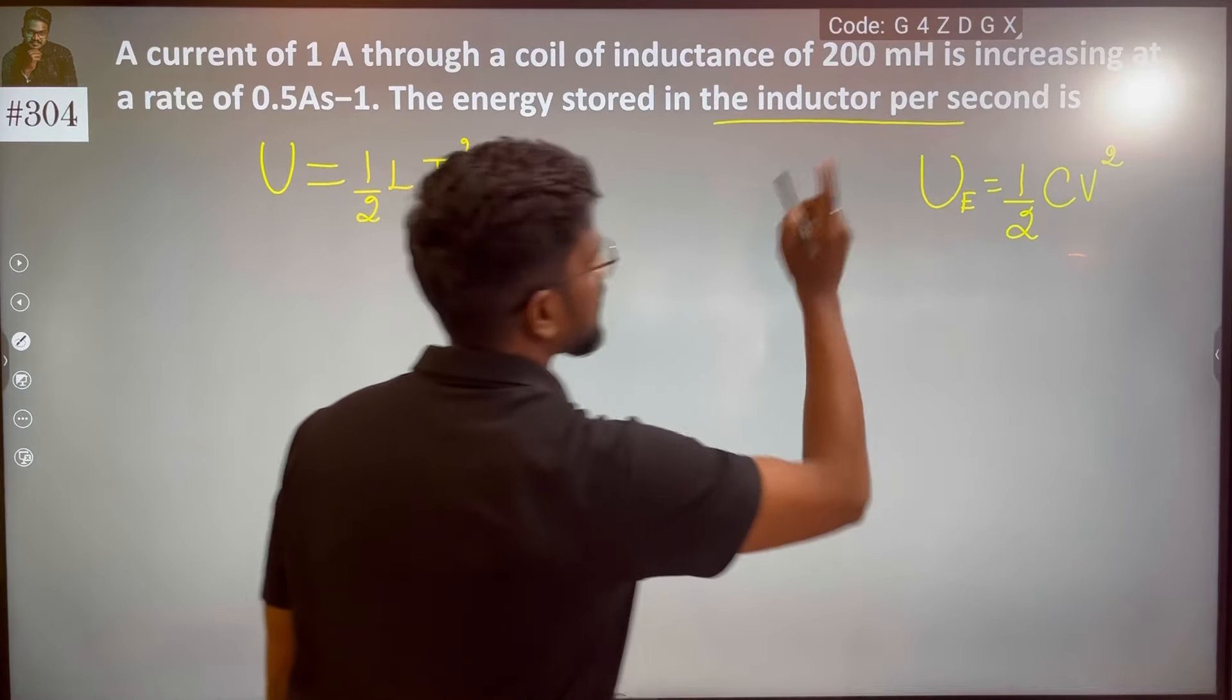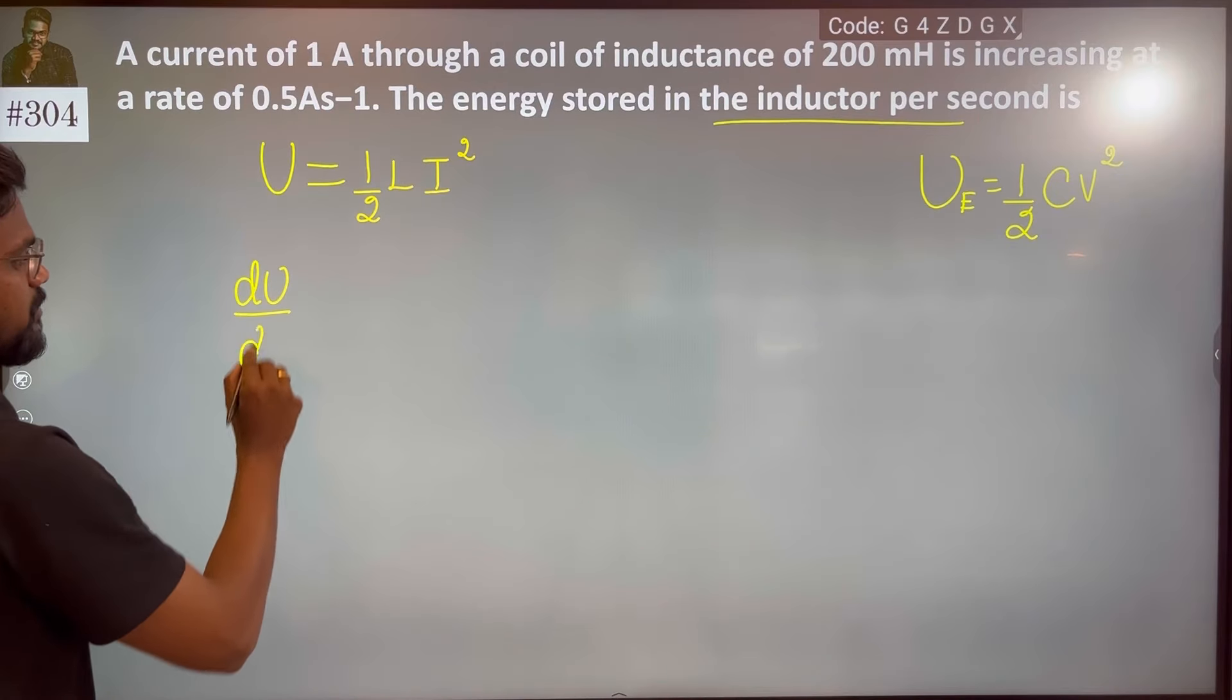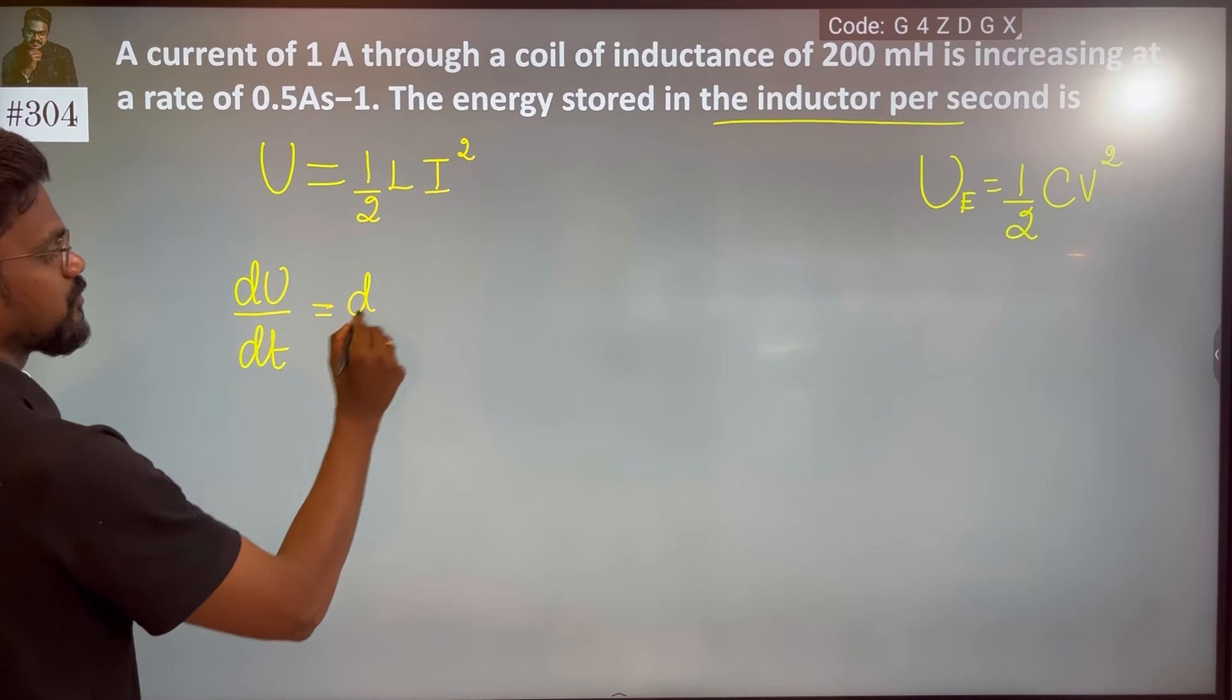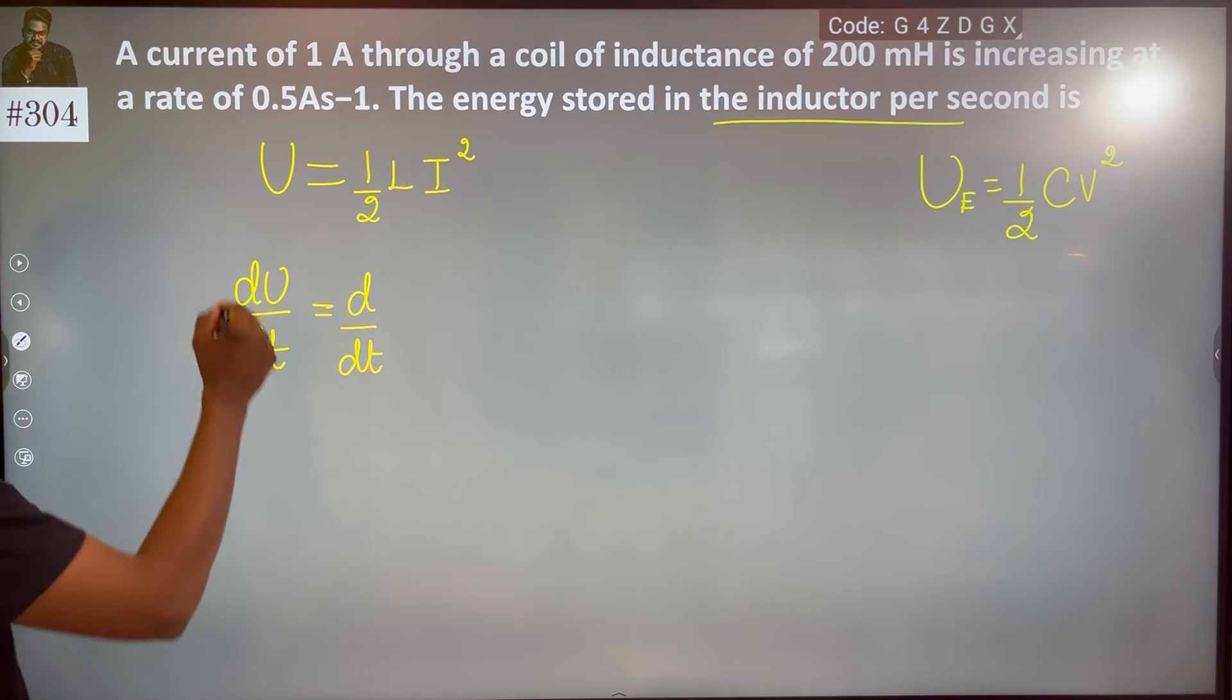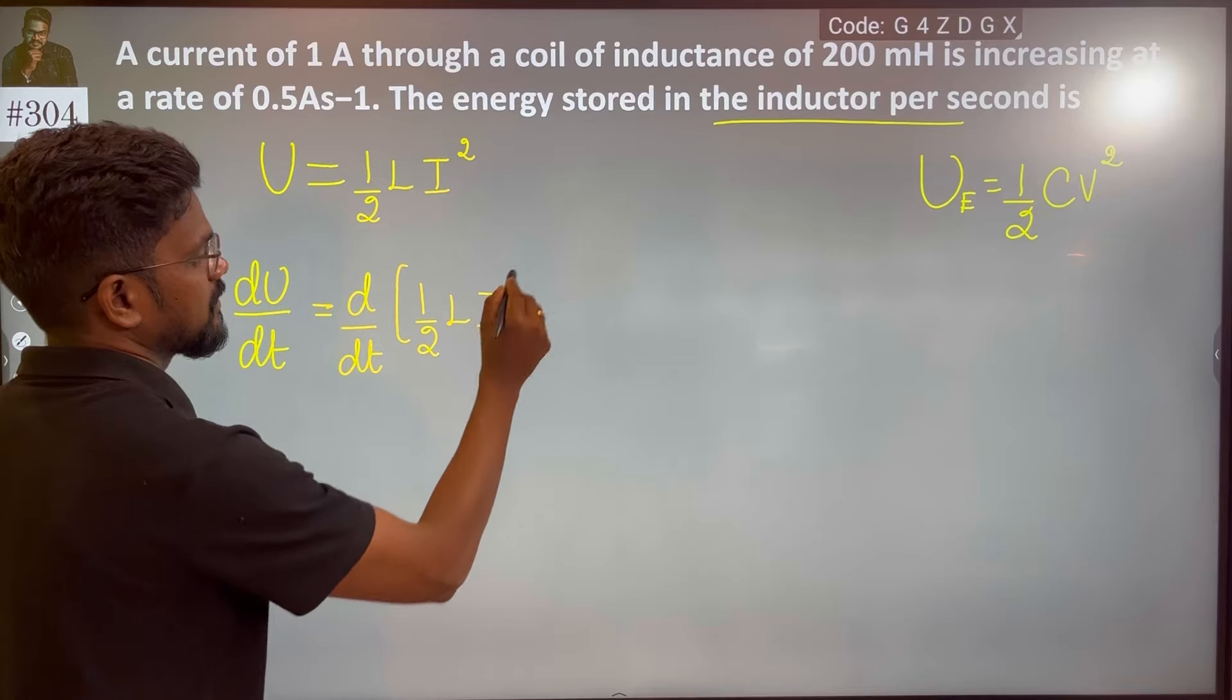So, what they are asking? Inductor per second. So, the energy stored inductor per second. It is a change. So, we know D upon DT. So, this is U is 1 by 2, 1 by 2 L I square.